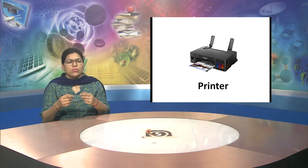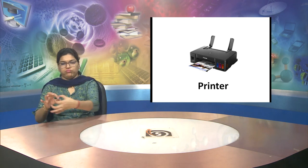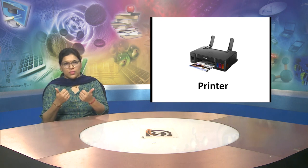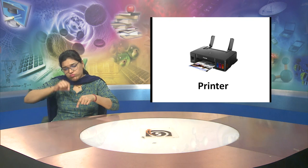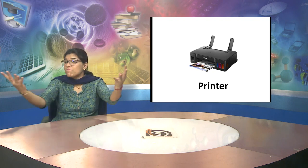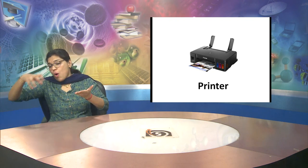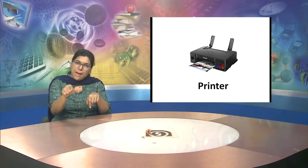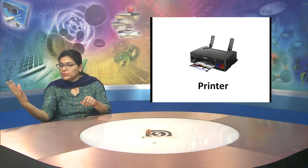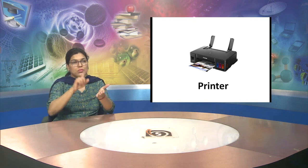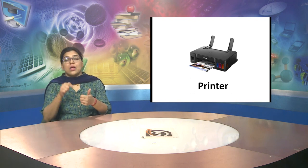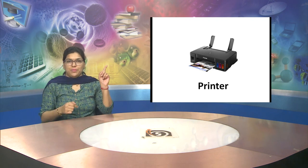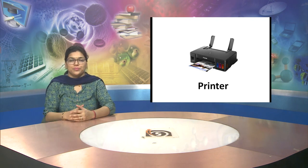It can be text. It can be image. It can be anything which we work on the system. Sometime we also can write on a paper with a pen and then we can copy it, put it in our system and then take a print out. We can take so many number of copies, as many as we need.